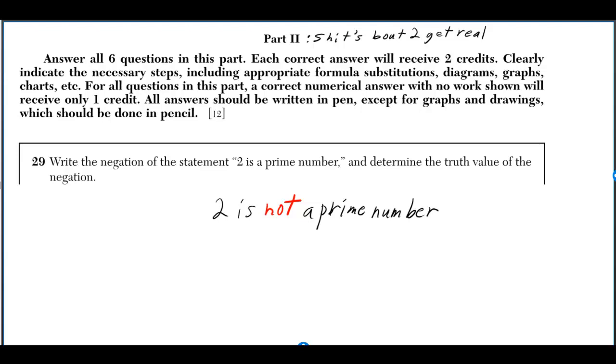The negation is '2 is not a prime number.' The truth value is either true or false. In this case, '2 is not a prime number' is a false statement.